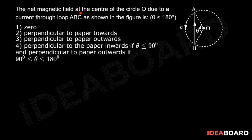The net magnetic field at the center of circle O due to a current through loop ABC, as shown in the figure, is (θ < 180°).